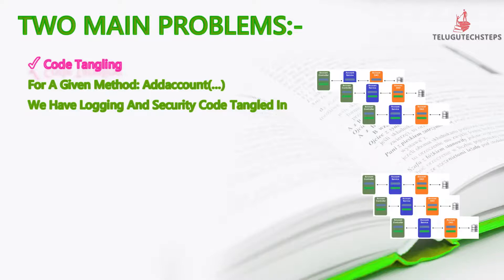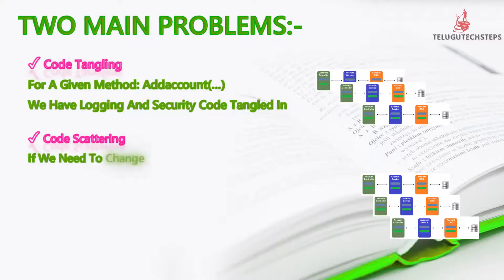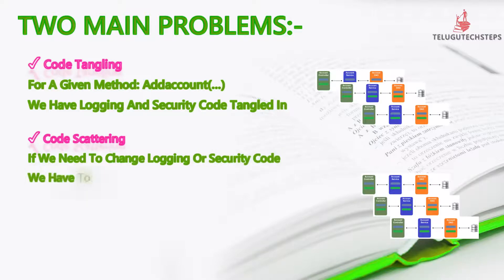The second problem is Code Scatter. If we need to change the logging or security code — for example, update the logic — we have to update all classes. In an application with many classes, every class needs to be updated individually. The code is both tangled and scattered.